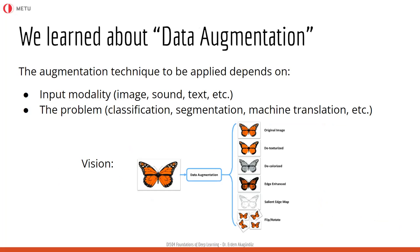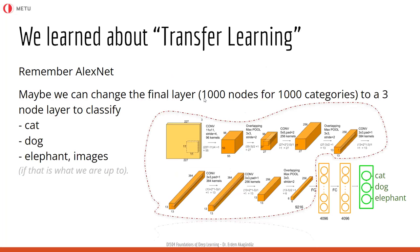Then we learned about data augmentation. Deep learning requires a lot of data, but we can create data to make models learn better and to regularize them. Augmenting data is a handcrafted task requiring specific context for different modalities. For vision you can decolorize, detexture, edge-enhance, rotate, apply affine transforms, or perspective transforms. For sound and text the augmentations are different. Data augmentation was very important and something you should usually do in your projects.